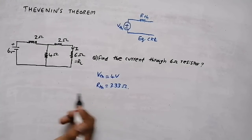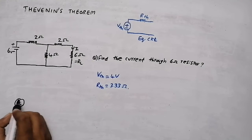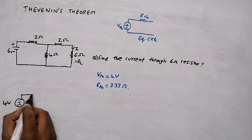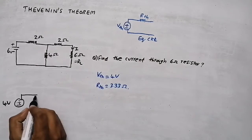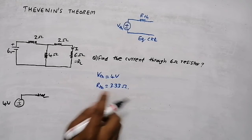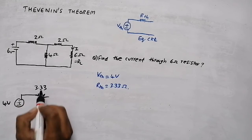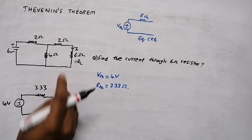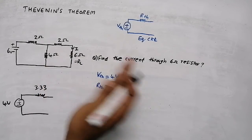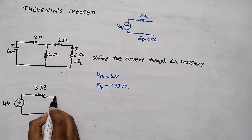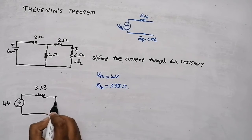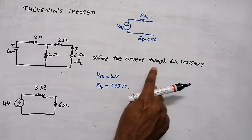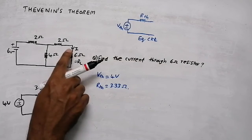Now we can draw the equivalent circuit. The equivalent circuit consists of Thevenin's voltage Vth = 4V in series with resistance Rth = 3.33 ohm. This is our equivalent Thevenin circuit. Now we connect the load resistance back — the load was 6 ohm, and in the question we need to find the current through the 6 ohm resistor.